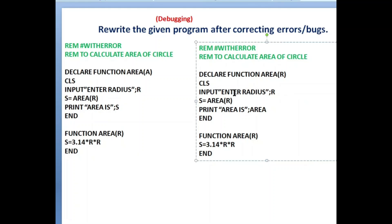After writing 'r' we should enter the value for radius: input r. Now we are calling the function — this is another way of calling because function returns a value. We call function area(r) and the return value is stored in s. So after that we print the value of s — we should write 'print s', not 'print area s'. This is another way of calling the function.